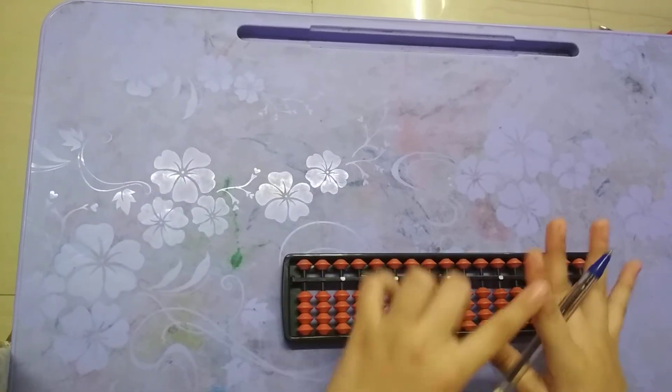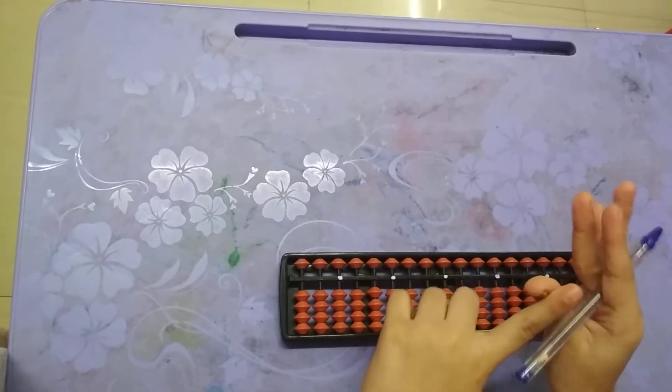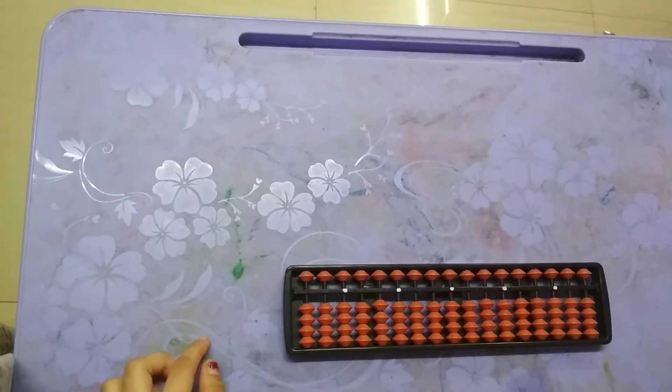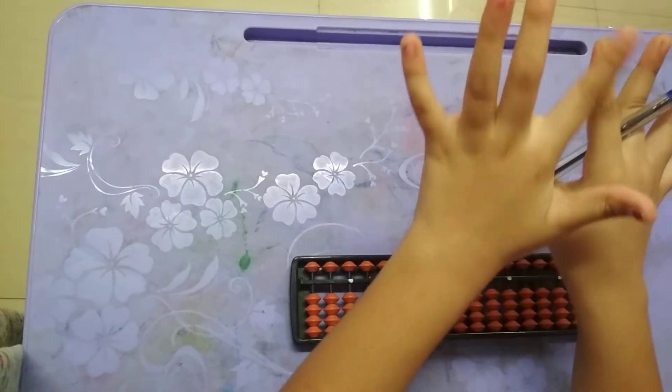The lower beads are controlled by these two fingers. This is for up, this is for down. Thumb is for up, index is for down.